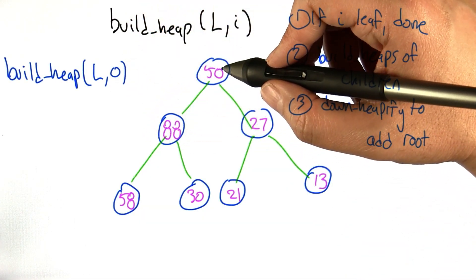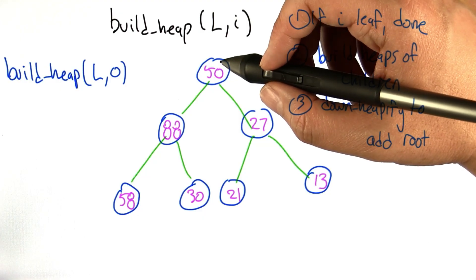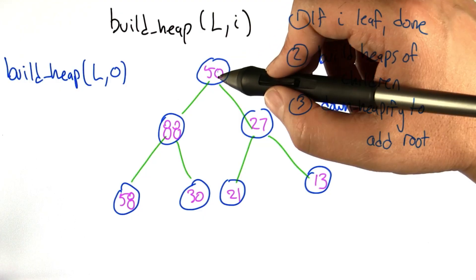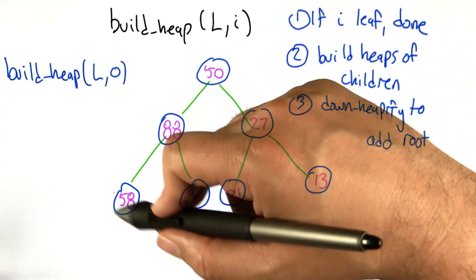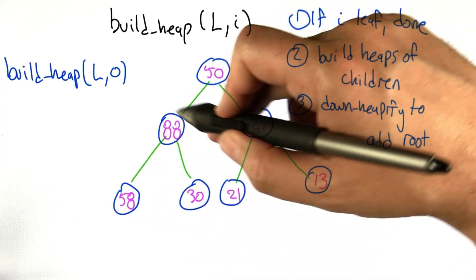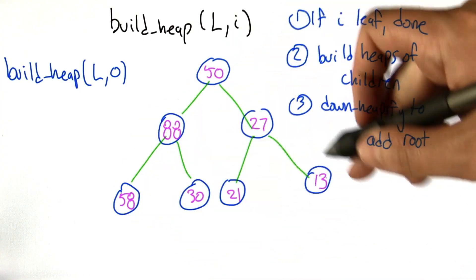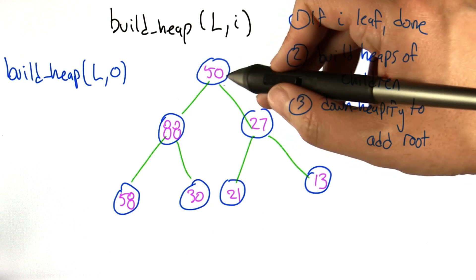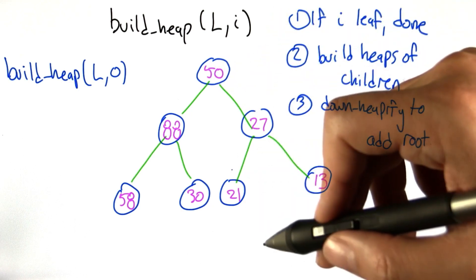We're going to start off at the root, which is node 0. To make this into a heap, we first magically make the left subtree into a heap and the right subtree into a heap. And once we're done, we can do downheapify on this value and everything will be fine.